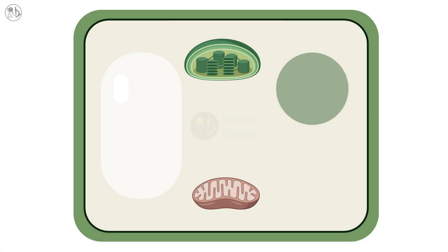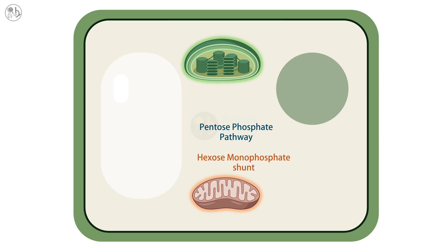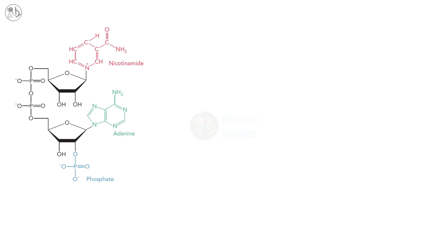Some metabolic pathways occur in specialized organelles such as the mitochondria or chloroplasts; others occur partly in the cytoplasm and partly in organelles. But the pentose phosphate pathway occurs entirely within the cytoplasm. It is also known as the hexose monophosphate shunt or the phosphogluconate pathway. The most important function of the pentose phosphate pathway is to reduce two molecules of NADP+ to NADPH for each molecule of glucose 6-phosphate.